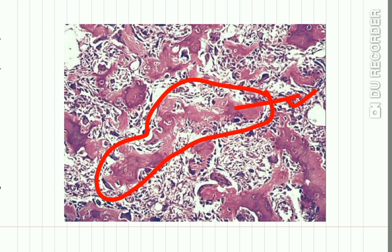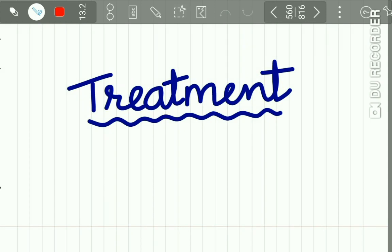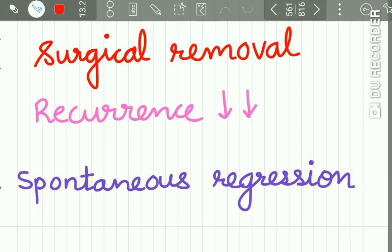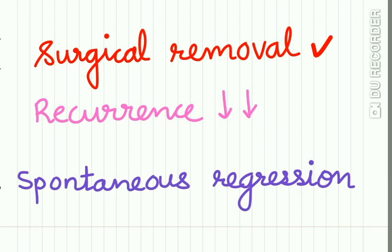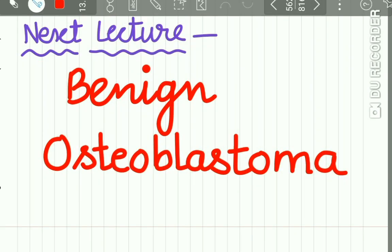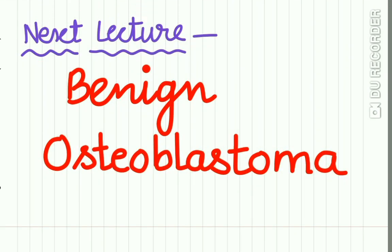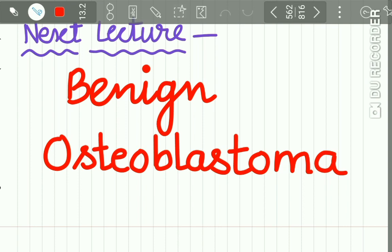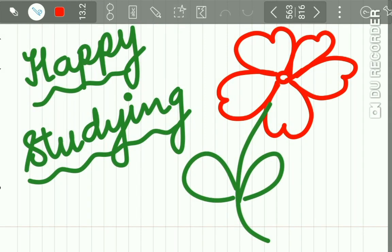The bone tissue is mature. Treatment is surgical removal. The recurrence rate is low, and the lesion may spontaneously regress if not treated. The next lecture will be on benign osteoblastoma. That's all for now — happy studying!